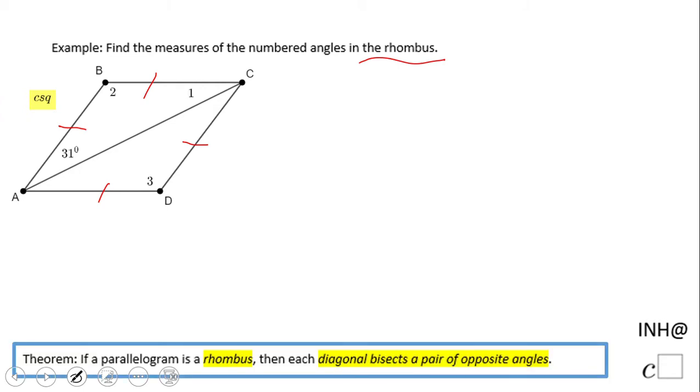...that is very important: the diagonals bisect opposite angles. This diagonal bisects angle BAC and angle BCD. All those angles are congruent, and angles 2 and 3 are congruent because they're opposite angles. In a rhombus or parallelogram, opposite angles are congruent.